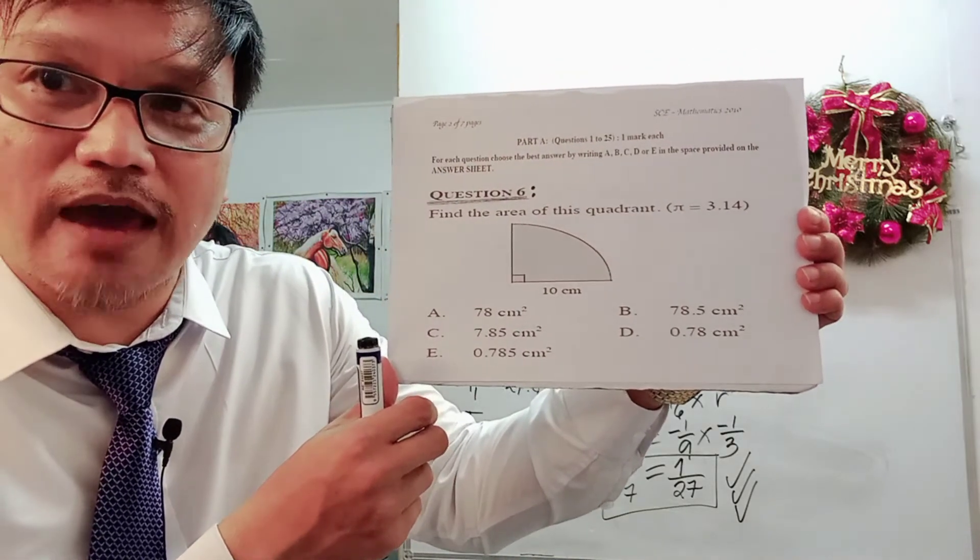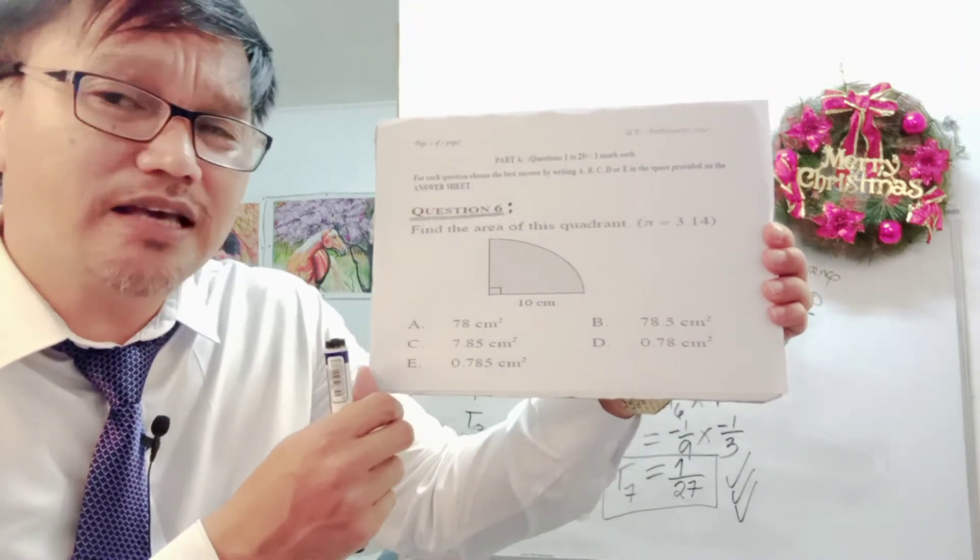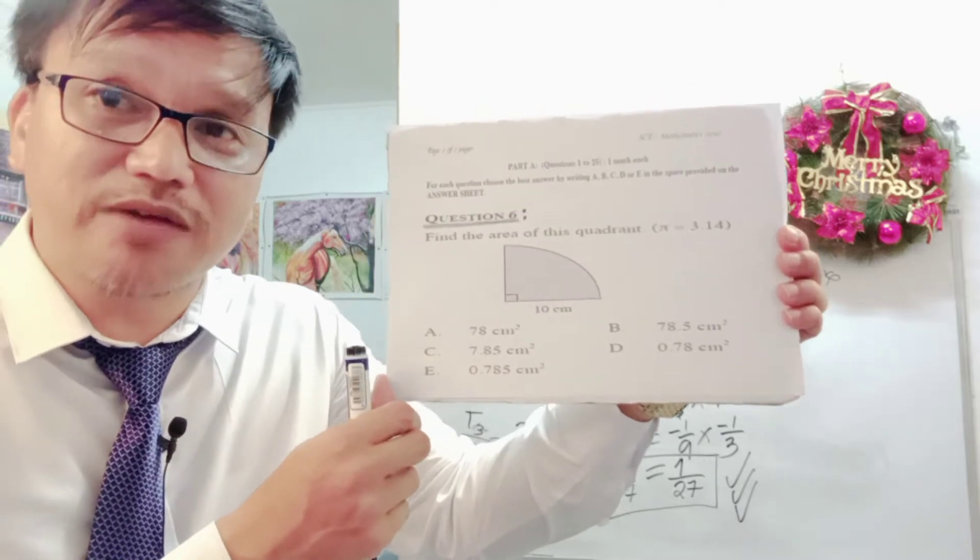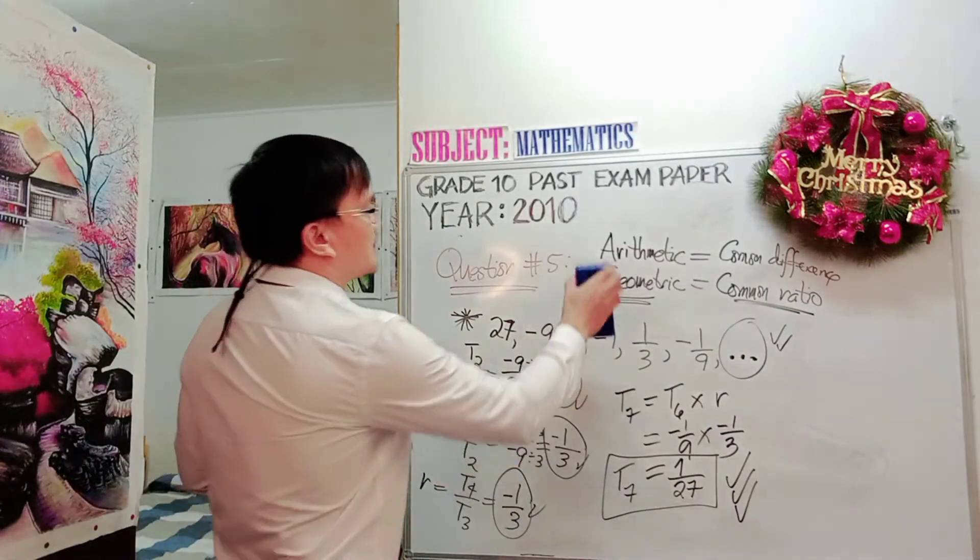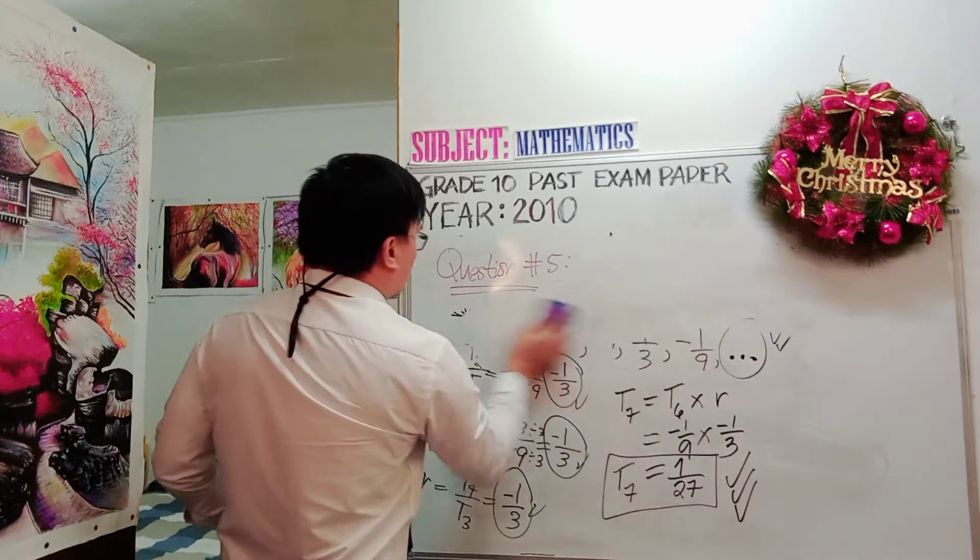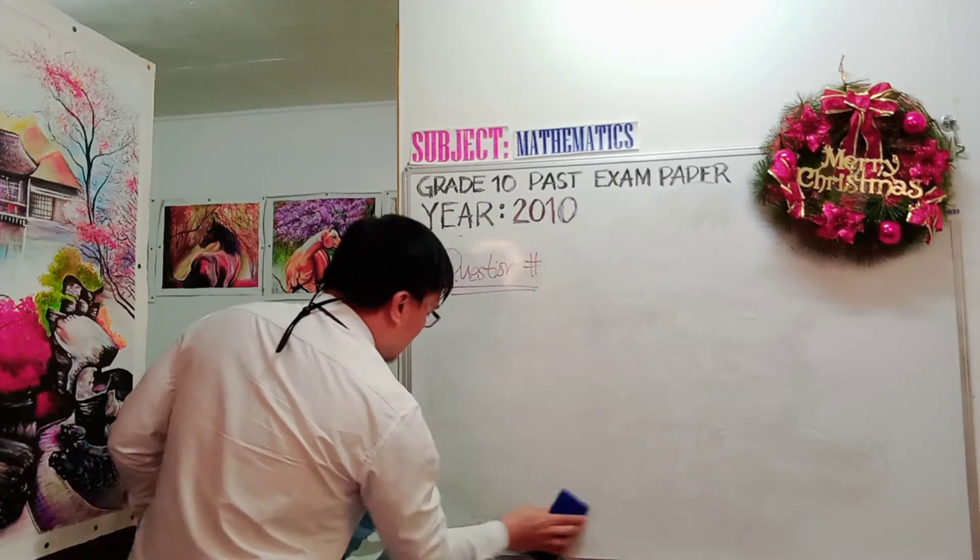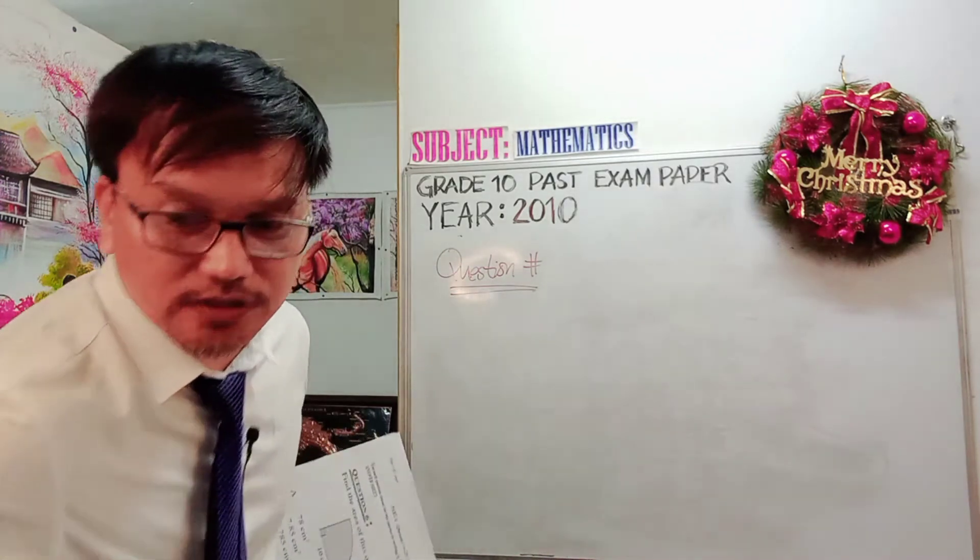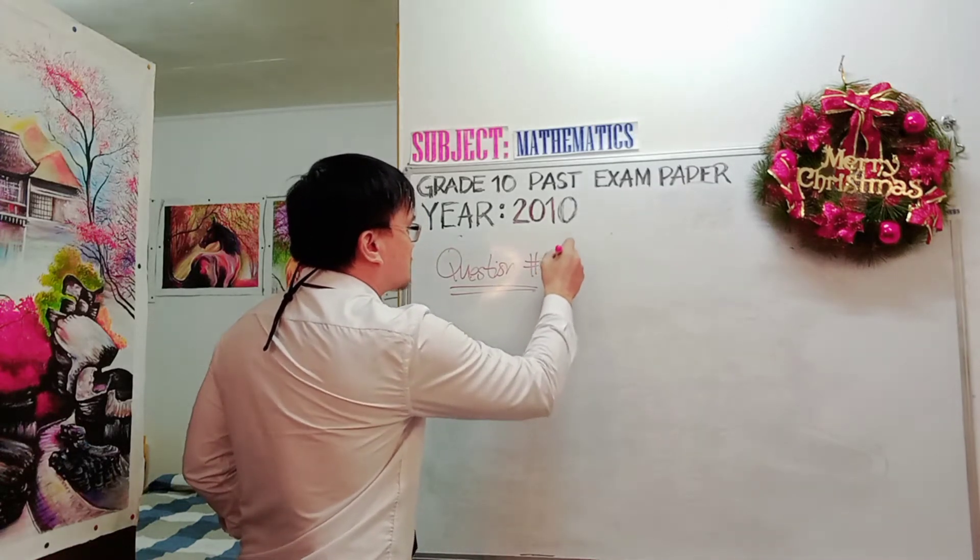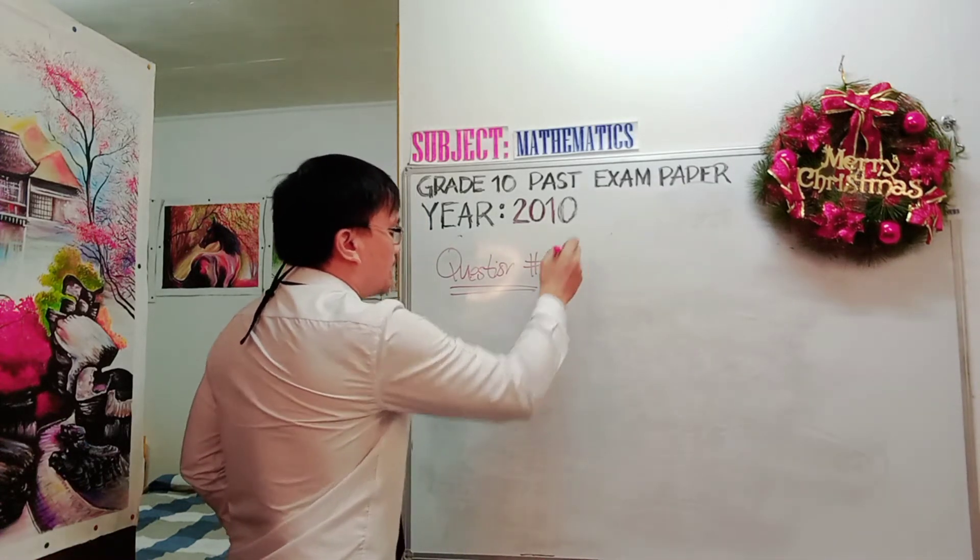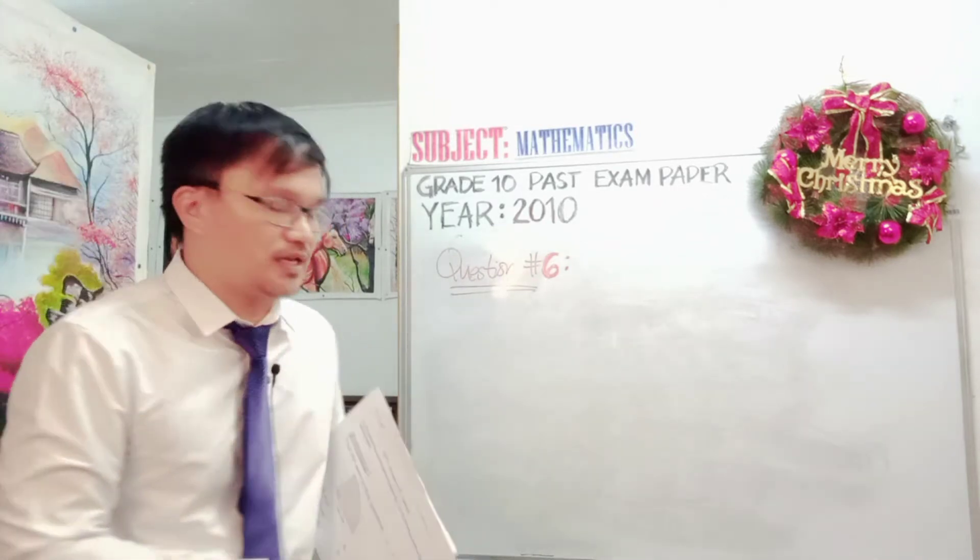The only way for you to find out which of these options is the correct answer in finding the area of the quadrant is to work it out. And you have three minutes to do that one in the national examination. Let's start. So let me now erase this question number 5, and this one is now question number 6. Again, let me tell you, the video that you are going to watch is going to be per question, per item.